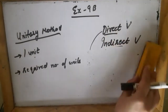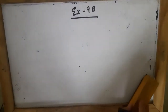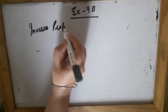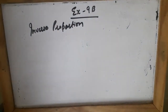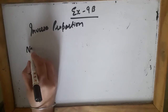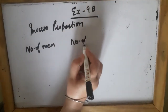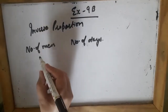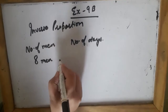In this lecture, we will study about indirect variation, also called inverse proportion. Let me take one example. Suppose there are a number of men and the number of days they take. I have two things: number of men and number of days. Suppose eight men are there who can complete some work — suppose they have to build a wall. Eight men can complete the work in three days.